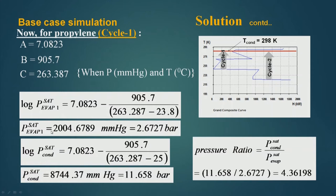For the evaporator the pressure is 2.6727 bar, and for the condenser using the same equation it comes out to be 11.568 bar — or more precisely 11.658 bar. That means the pressure has to be raised from 2.6727 bar to 11.658 bar through compression. So the pressure ratio becomes 11.658 divided by 2.6727, which comes out to be 4.36198. This is the pressure ratio for cycle 1.